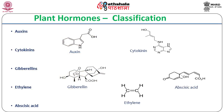In general, plant hormones are classified into five major classes including auxins, cytokinins, gibberellins, ethylene, and abscisic acid.